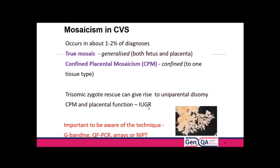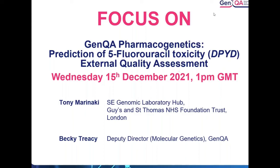Q&A continued: Is the higher mosaicism for chromosome 13 a prenatal diagnosis finding or at live-born? The figures were at live-born. It could be to do with survival — the full trisomy 13 either doesn't get far enough to be live-born or doesn't get far enough for prenatal diagnosis. Both trisomy 18 and 13 are not viable, so unless it's mosaic you might not get that far. Thank you very much to both presenters. The next Focus On webinar is on Wednesday the 15th of December, covering DPYD EQA. Thank you and goodbye.